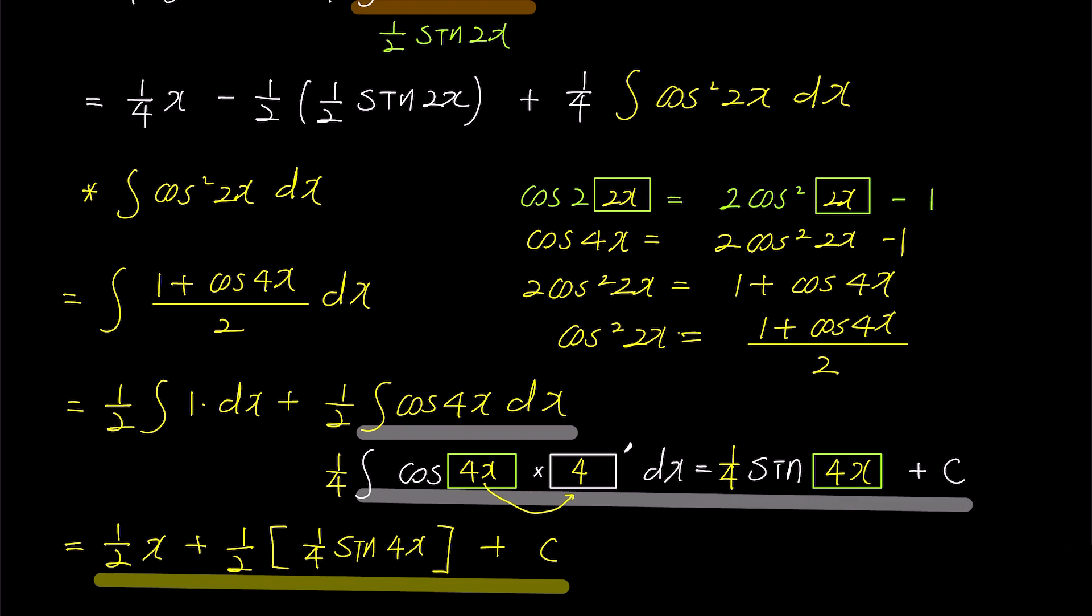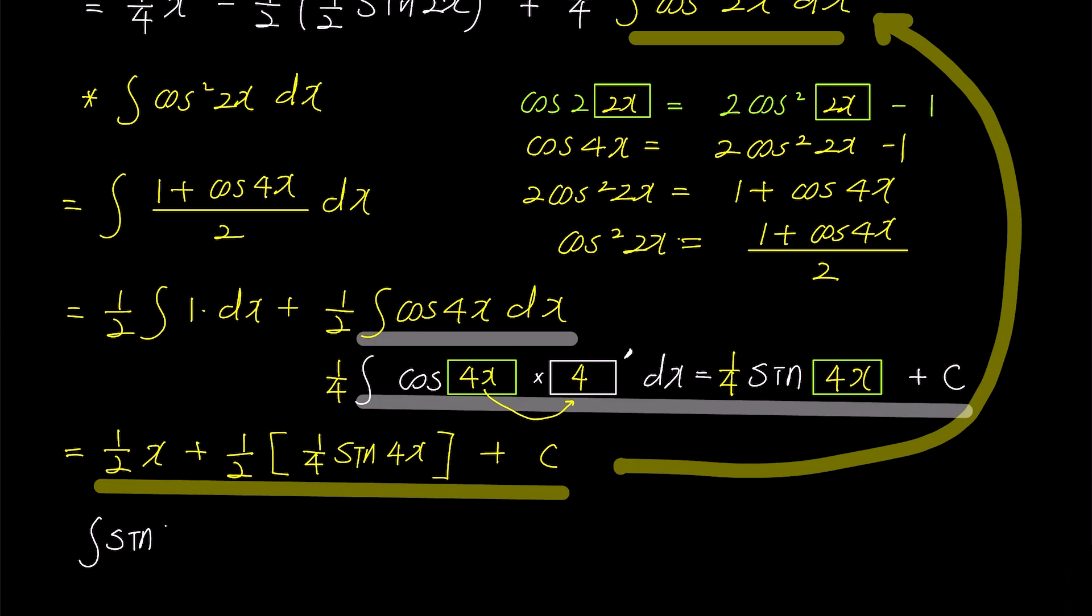We need to further substitute this result into the yellow equation above. So the integral of sine to the power of 4x becomes 1 over 4x minus 1 over 4 sine 2x plus 1 over 4 times 1 over 8x plus 1 over 32 sine 4x plus c.